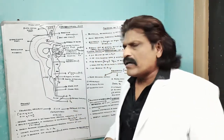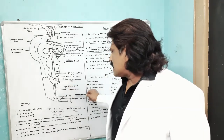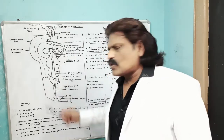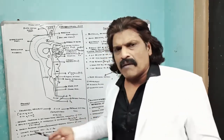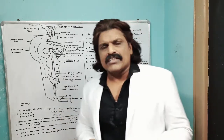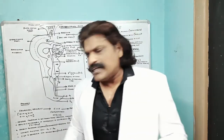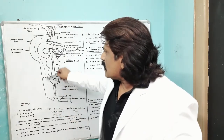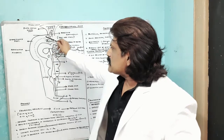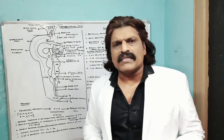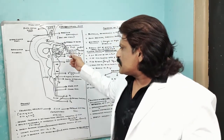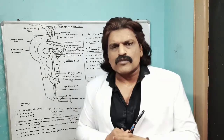Another clinical point: the spinal cord ends at the level of L1, whereas the meninges go up to the level of S2. When we do a lumbar puncture, we enter between L1 and S2 to obtain CSF without injuring the spinal cord. The CSF, which is an ultrafiltrate of the blood, circulates around the brain in the subarachnoid space and is finally absorbed in the superior sagittal sinus. These are the important points in the formation, circulation and absorption of cerebrospinal fluid.